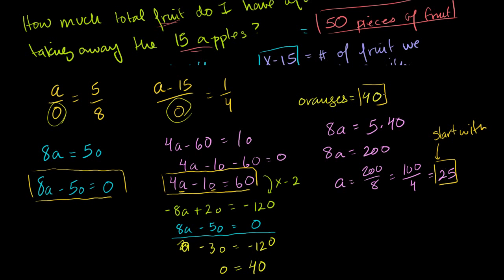So remember what A and O are. O is the number of oranges we have throughout the problem. A is the number of apples we start with. That's what we start with. So you can say that we start with 25 apples, 40 oranges, or we start with 65 pieces of fruit. Then if you were to remove 15 fruit, you will end up with 50 fruit, which is the exact same answer we got the other way of doing this problem.